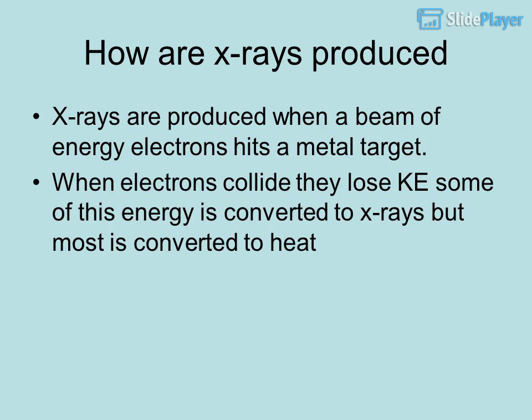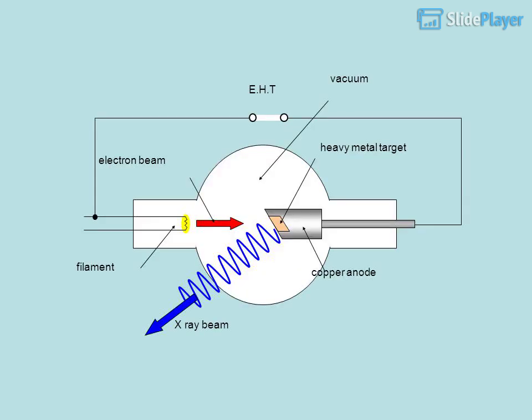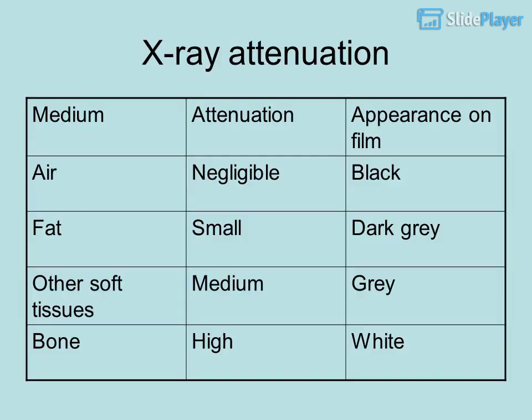X-rays are produced when a beam of high-energy electrons hits a metal target. When electrons collide, they lose kinetic energy; some of this energy is converted to X-rays, but most is converted to heat. The X-ray tube consists of: a copper anode, filament, heavy metal target, electron beam, EHT supply, and operates in a vacuum.